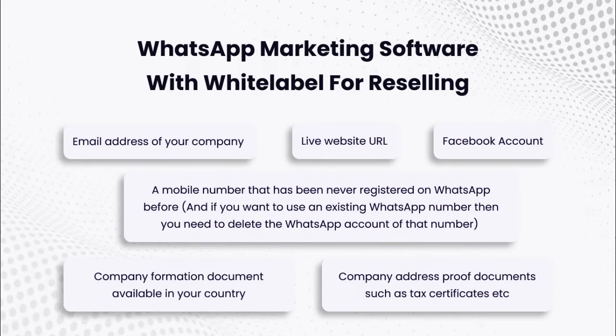You will need the following to get started: an email address of your company, a live website URL, a Facebook account, a mobile number that has never been registered on WhatsApp before — and if you want to use an existing WhatsApp number, you need to delete the WhatsApp account of that number. Also, a company formation document available in your country, and company address proof documents such as tax certificates.